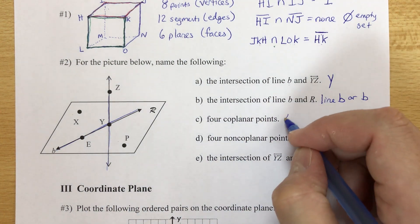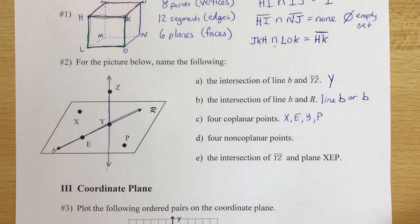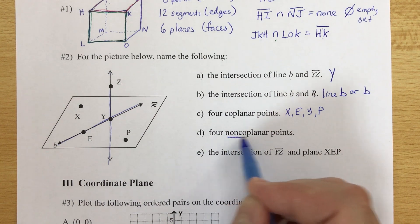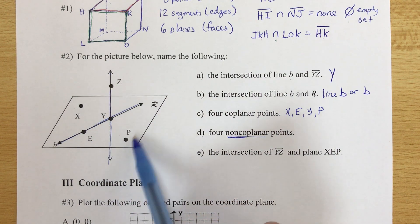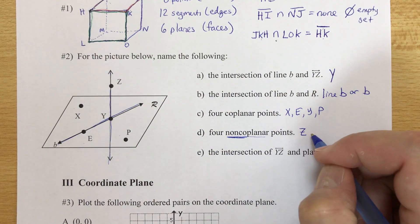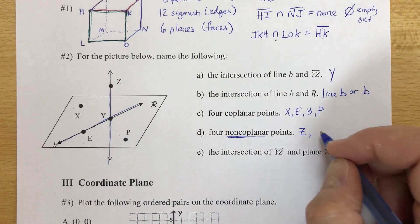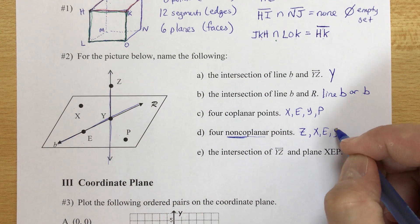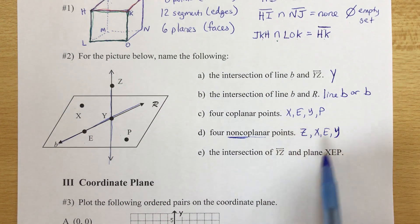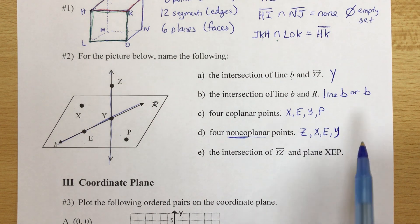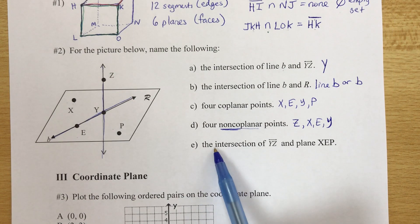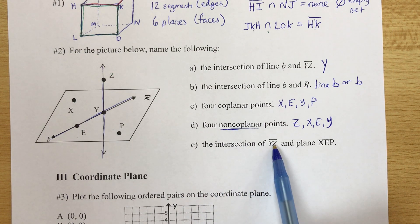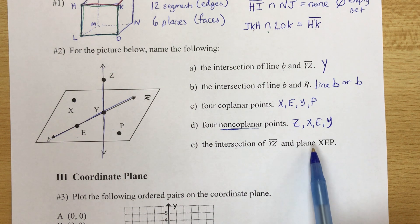Coplanar points means points in the same plane — we have four points in the plane: X, E, Y, P. Non-coplanar means four points not all in the same plane. The only point not in plane R is Z, so we use Z and then any three others — say X, E, Y. As a group, no single plane can contain all four at the same time.